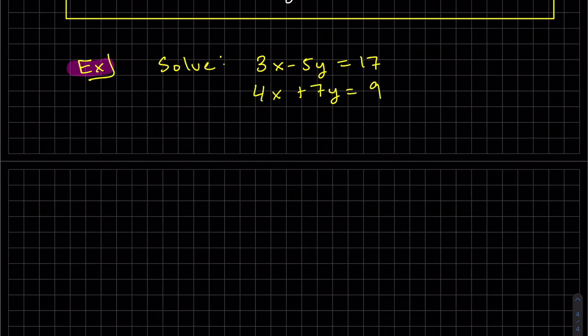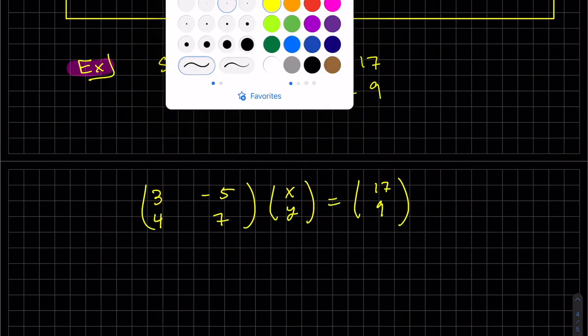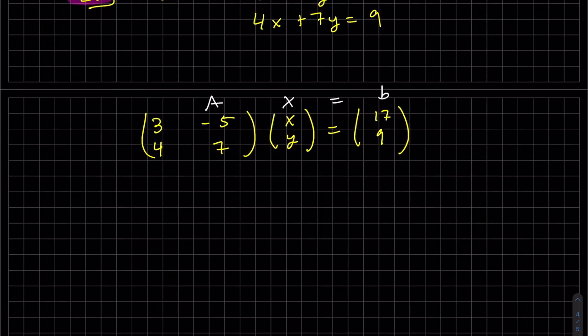So let's write this as a system. So we need to actually find three determinants. First, to do this Cramer's rule, we need to find the determinant of A. Let's find the determinant of A1. And what we do is we replace the first column with B. The other column stays the same.